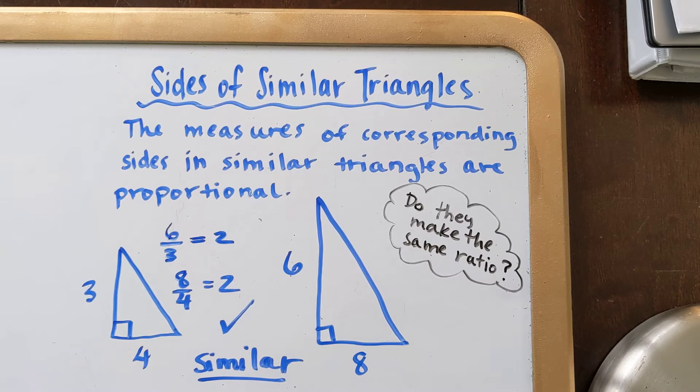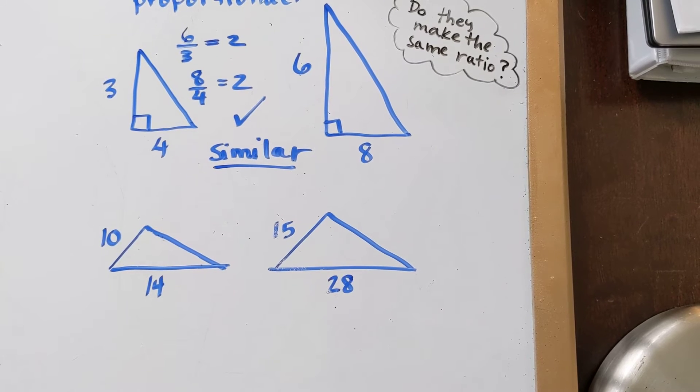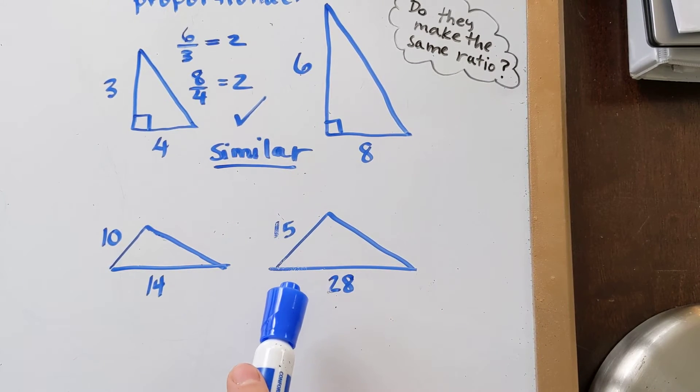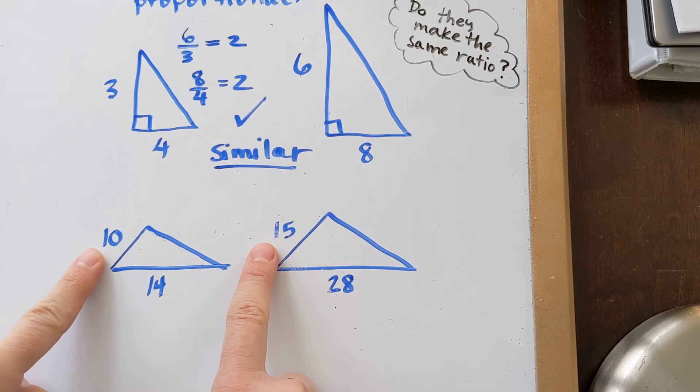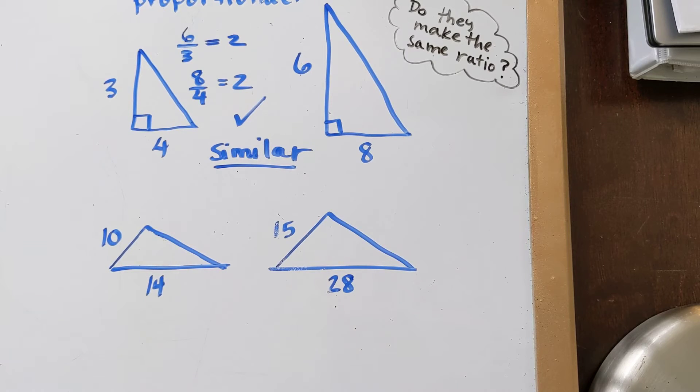Let's try a different example here. Okay, so I can see I have a triangle here with a 10 and 14 and a 15 and 28. It looks to me like these are corresponding sides and those are corresponding sides. So we are going to divide them and figure out, do they make the same ratio? If you want to do it yourself, pause the video right now. Otherwise, I'm going to go over it.